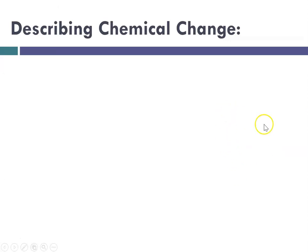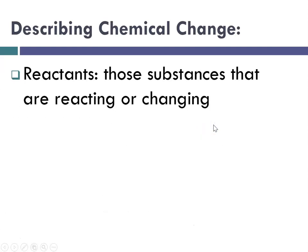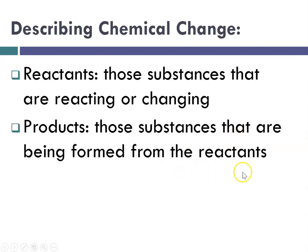So how do we describe a chemical change? Well, let's understand the definitions. Reactants are those substances that are reacting or changing. We also call them starting materials. And the products are those substances that are being formed. So the products are produced.